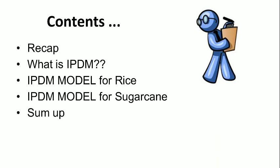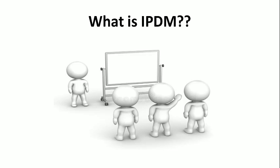How will you define IPDM? Then we'll look at different models — first, the IPDM model for rice crop, second the IPDM model for sugarcane, and lastly a summary. IPDM involves a management system which utilizes compatible combinations of all available techniques to keep the pathogen population below the ETL — Economic Threshold Level — which would not cause economically unacceptable damage to the crop.